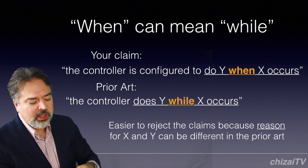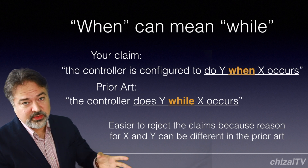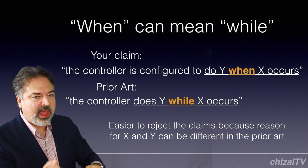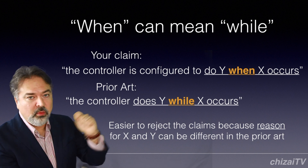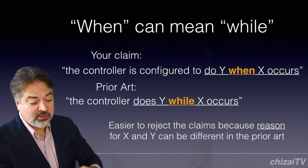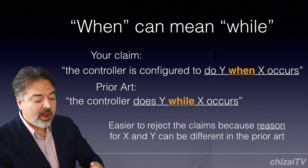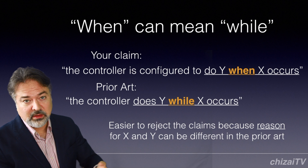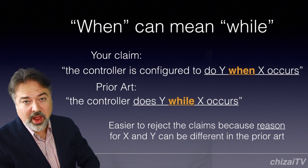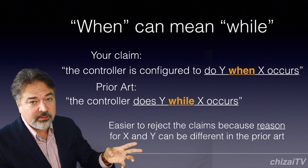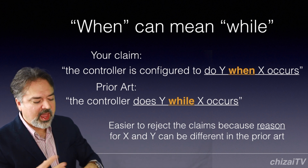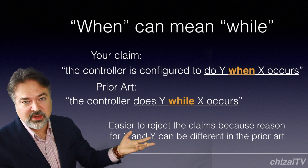So let me give you an example. Usually the intention is when X happens — X happens, then Y happens because X happened. But the language used is usually 'when.' And the problem with that is it can mean 'while.' And so in the prior art, you could have X and Y happening at the same time and just completely unrelated — not for any reason.